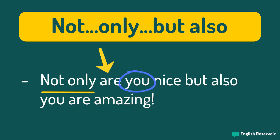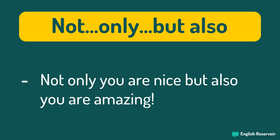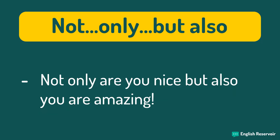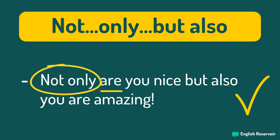Let's look at the incorrect version where we do not invert the subject with the verb: 'Not only you are nice, but also you are amazing.' This is a common mistake. This correlative conjunction is a little special, whereby you need to invert the subject with the verb if you begin the phrase with 'not only.' Therefore: 'Not only are you nice, but also you are amazing.' However, if we do not begin the phrase with 'not only,' then we do not need to do the inversion.